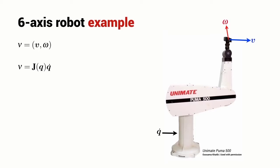For a robot like this, the Jacobian matrix J is a six-by-six matrix. It's square. So we can rearrange this expression to obtain the robot joint angle velocity that we need in order to achieve a desired robot end effector spatial velocity.